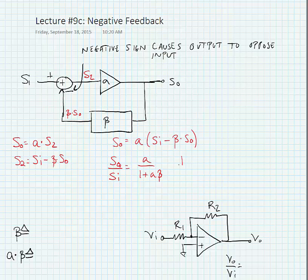Now in the limit of S_out over S_i where A goes to infinity, which is what we want from our voltage amplifier, this of course just equals 1 over beta.